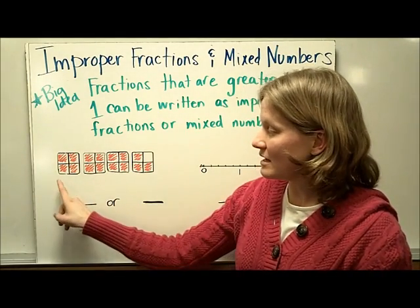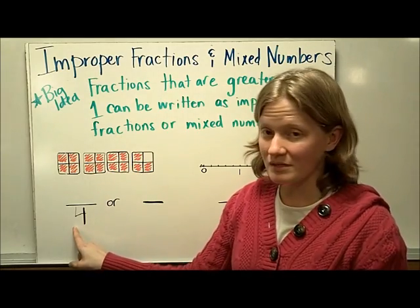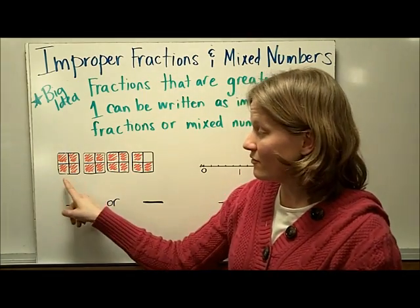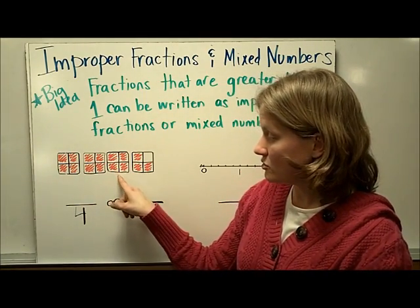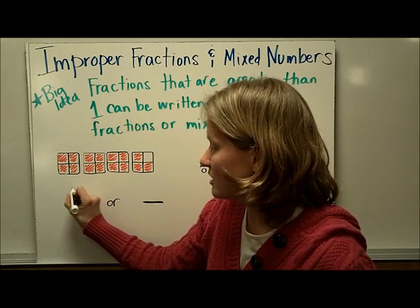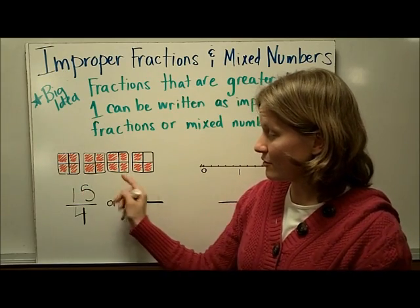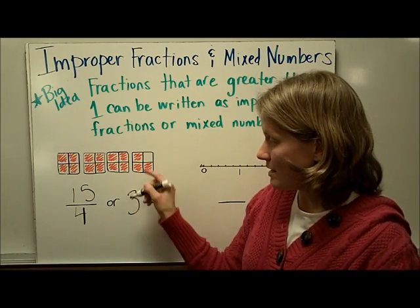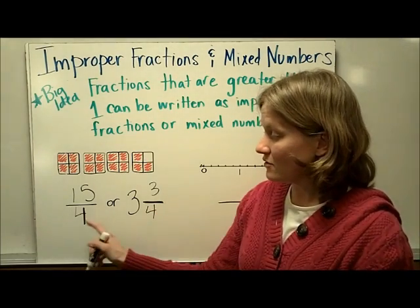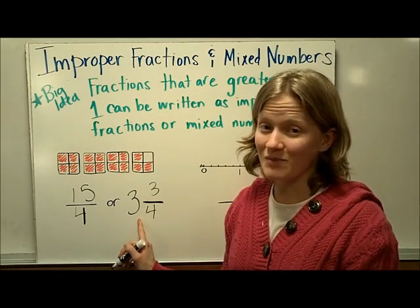In this model we see that each of the squares is broken up into 4 pieces, that's why 4 is the denominator. In order to get the numerator we have to count the total number that are shaded in: 4, 8, 12, 13, 14, 15. So this fraction can be written as 15 fourths, or we see that there are 3 wholes and in the last square 3 fourths of the pieces are shaded in. So 15 fourths is the improper fraction and 3 and 3 fourths is the mixed number.